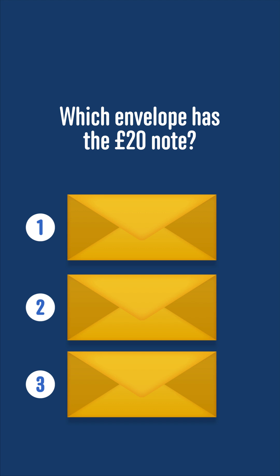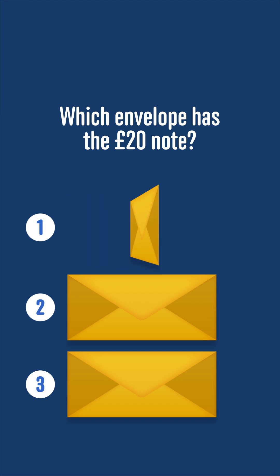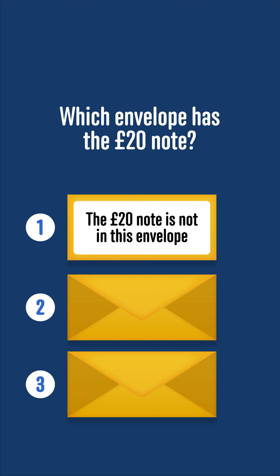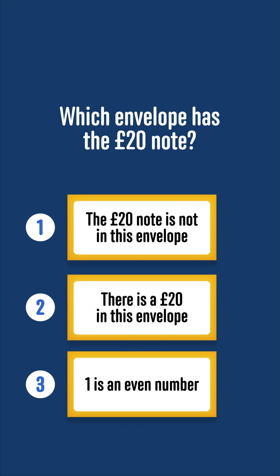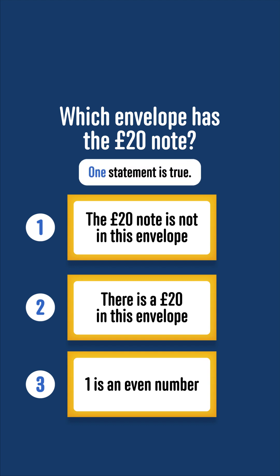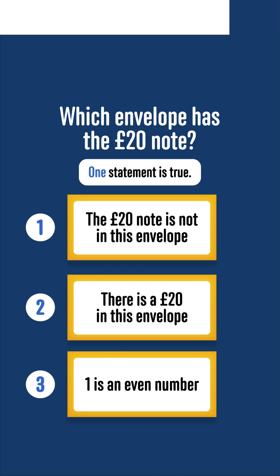A 20-pound note is contained in one of three envelopes. Envelope 1 reads: the 20-pound note is not in this envelope. Envelope 2 reads: there is a 20-pound note in this envelope. Envelope 3 reads: one is an even number. If only one of the statements is true, which envelope contains the 20-pound note?